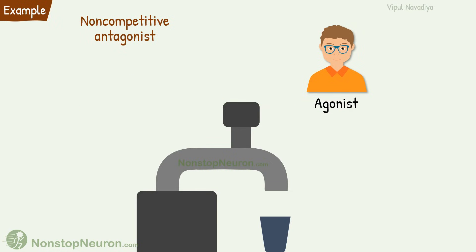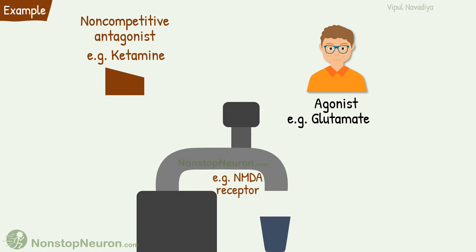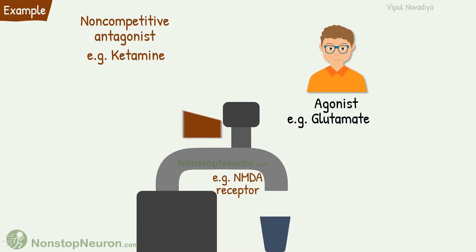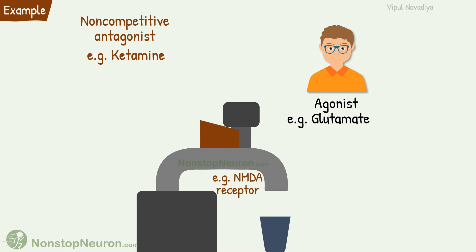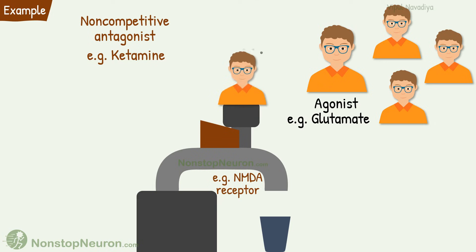Now the example for non-competitive antagonism. For the NMDA receptor, glutamate is the agonist and ketamine is the non-competitive antagonist. If ketamine has blocked the receptor, no concentration of glutamate can activate the receptor.